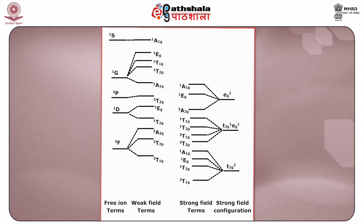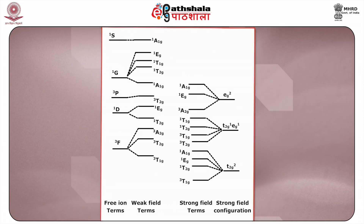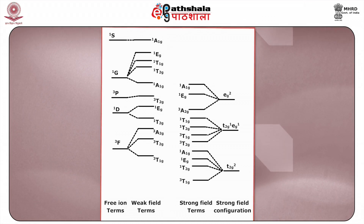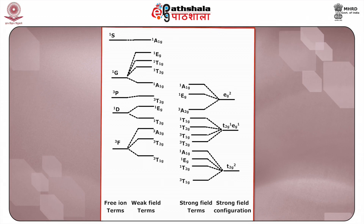The splitting of weak and strong field in their respective group theoretical terms is shown as follows: on the extreme left are free ion terms; to its right are weak field terms; to its further right are strong field terms; and on the extreme right are the strong field configurations.